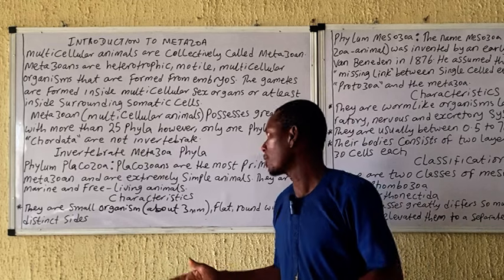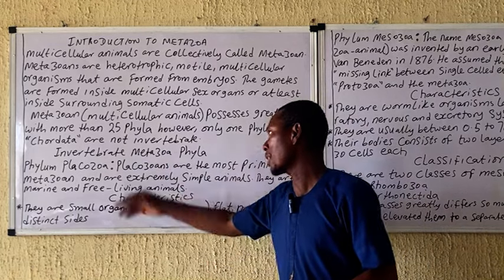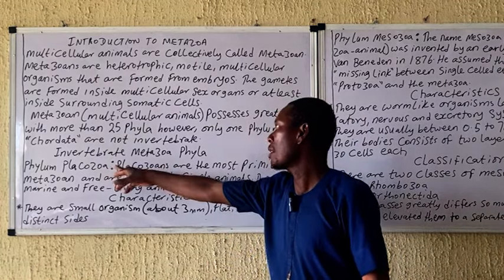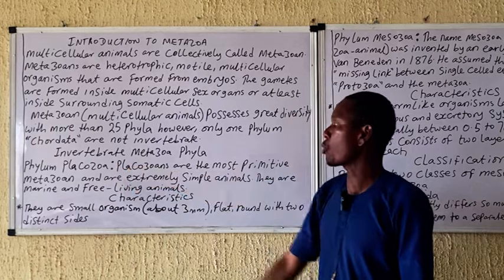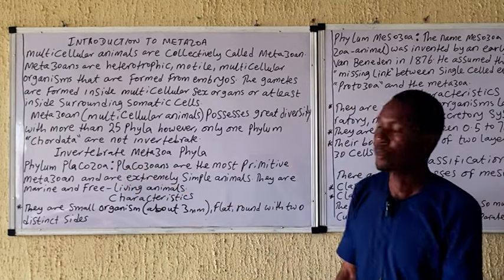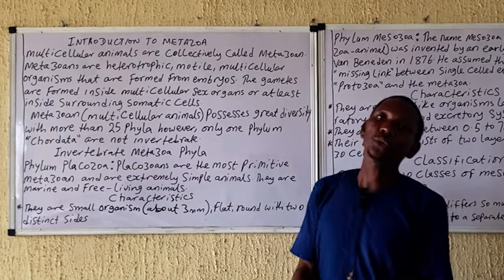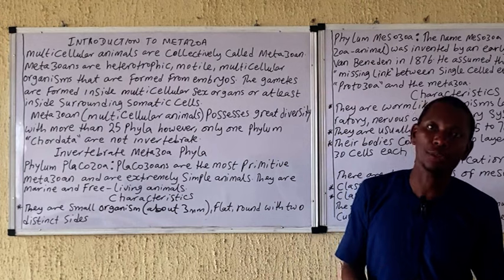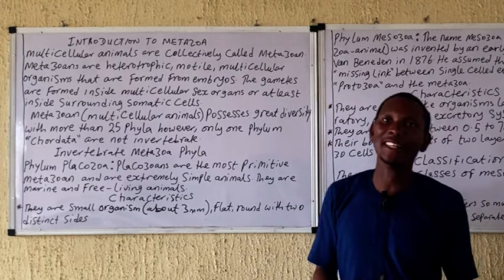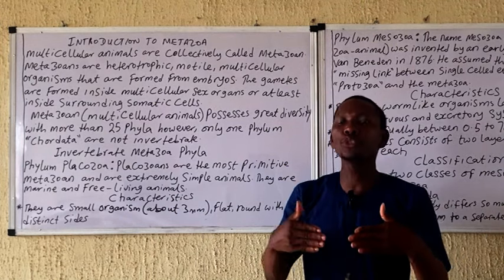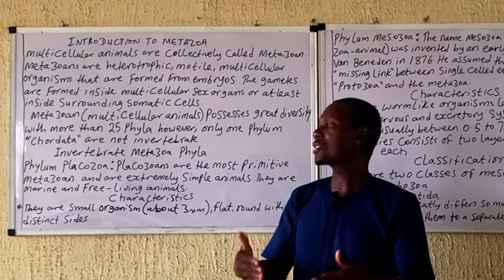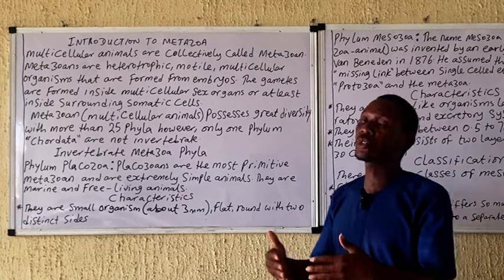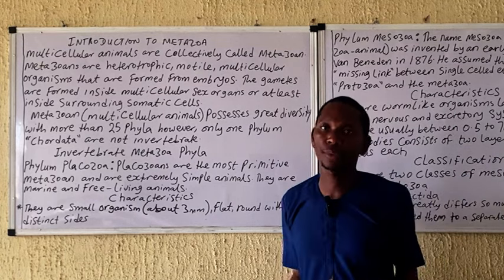We're talking about the first invertebrate phyla of the Metazoa, and that is the phylum Placozoa. Placozoa are actually the simplest animals on earth. They are regarded as the most primitive Metazoa and they are extremely simple.